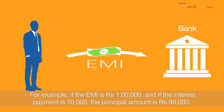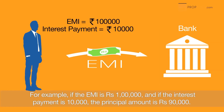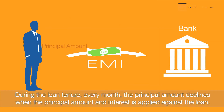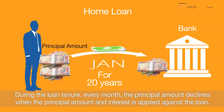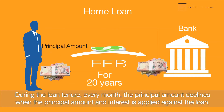For example, if the EMI is 1 lakh and the interest payment is 10,000, the principal amount is 90,000 rupees. During the loan tenure every month, the principal amount declines when the principal amount and interest is applied against the loan.